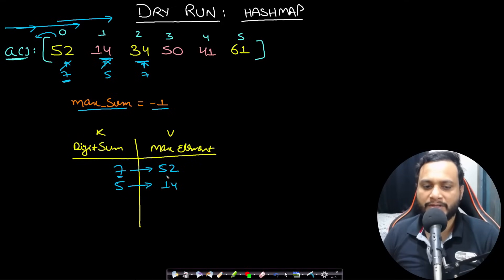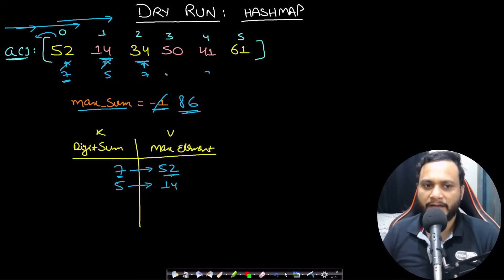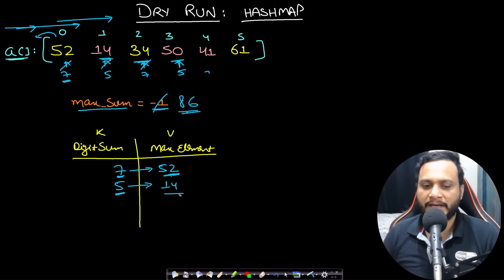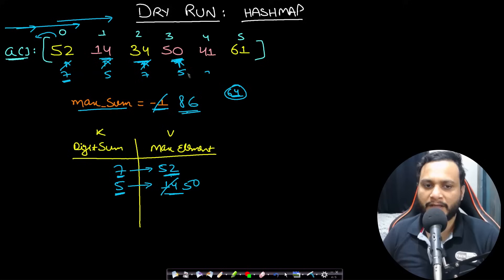At item 34, digit sum is 7. Map has key 7 with max value 52. So 52+34=86, which is greater than -1 — update max_sum to 86. Before moving on, 34 < 52 so map[7] stays 52. At item 50, digit sum is 5. Map has key 5 with value 14. So 14+50=64, which is less than 86 — no update to max_sum. Since 50 > 14, update map[5]=50.